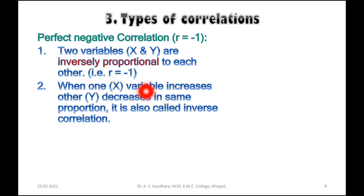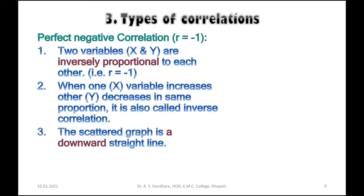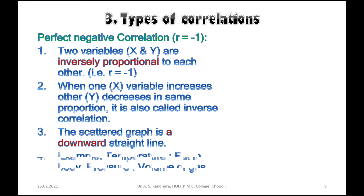When one variable increases, the other decreases and vice versa. The scatter graph is a downward straight line — positive correlation means upward direction, negative correlation means downward direction.